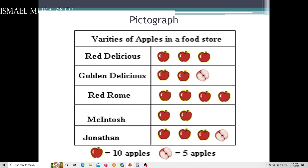Next, we have the pictograph. A pictograph, you can use pictures. Of course, you have to come up with a legend. One whole apple means 10 apples, the half means 5 apples. So you can see immediately. Golden Delicious, there are only 25. This is varieties of apple in a food store.